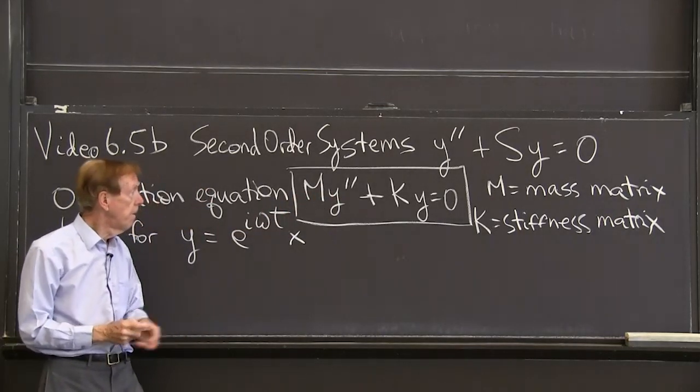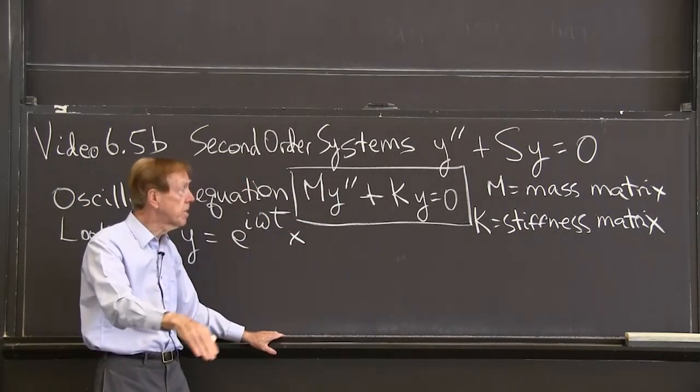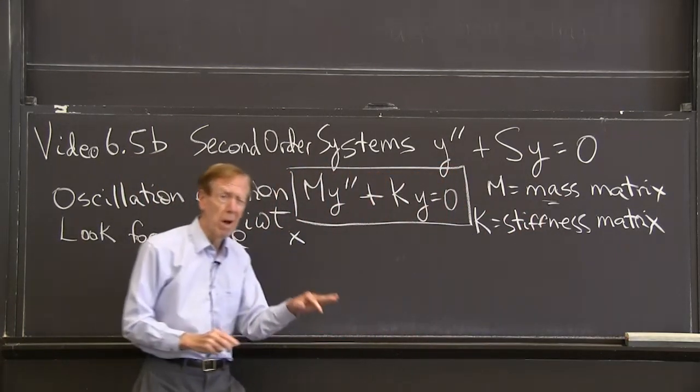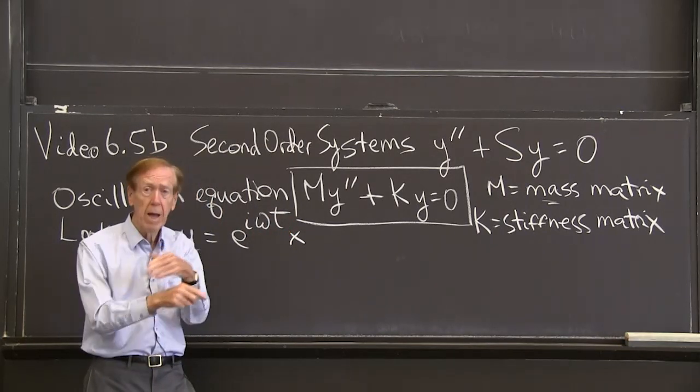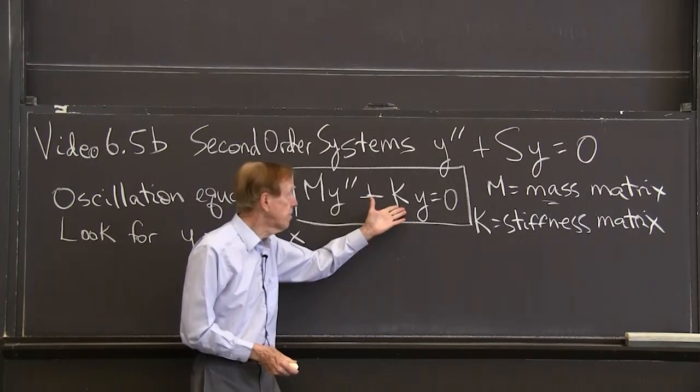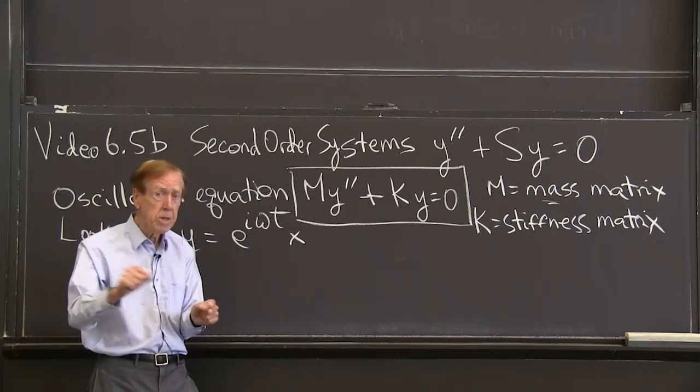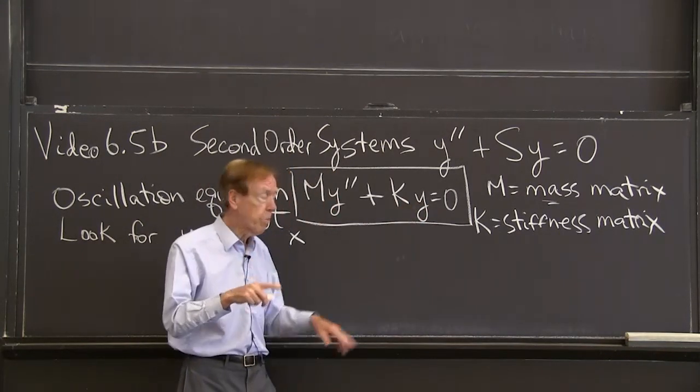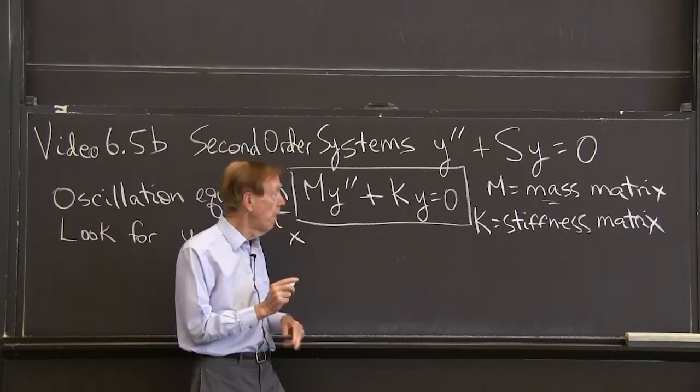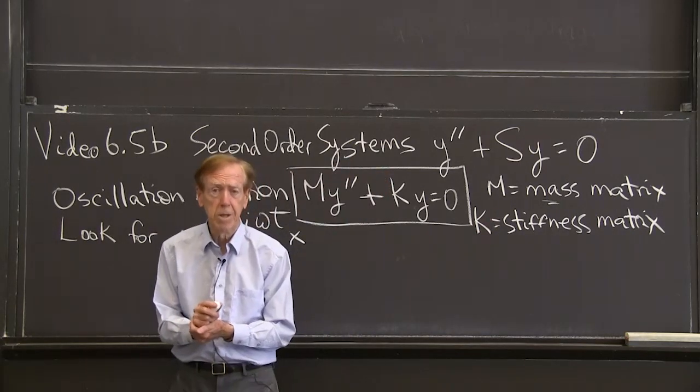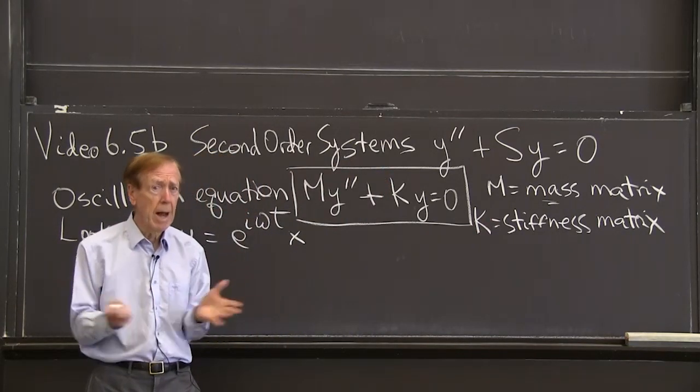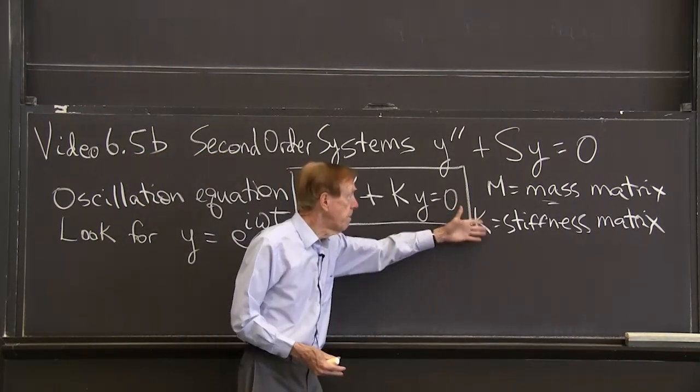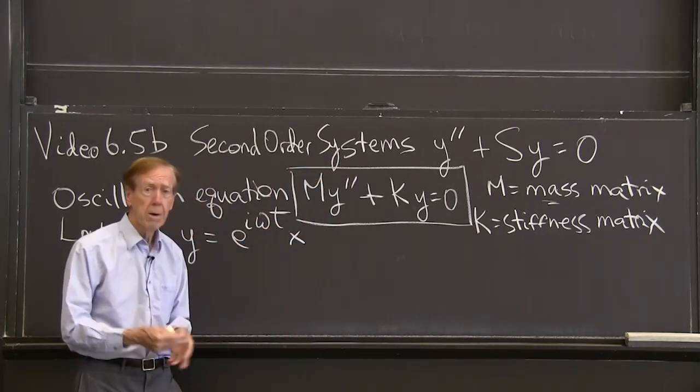Mass times acceleration. So m will be a matrix, often a diagonal matrix, telling me the masses. I have n equations here, so I have n masses. And I have a bunch of springs connecting those masses. And then there's a matrix K multiplying Y itself, and that's always called the stiffness matrix. In applications, the first job is to take the problem and create these matrices.